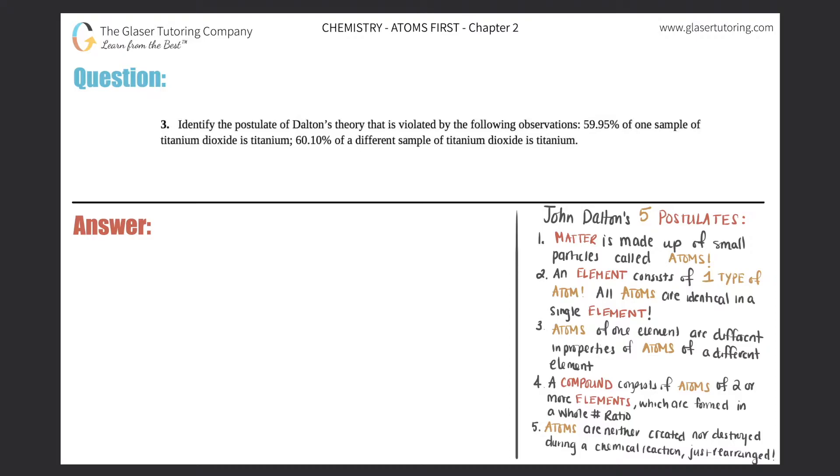Number three. Identify the postulate of Dalton's theory that is violated by the following observations: 59.95% of one sample of titanium dioxide is titanium. 60.1% of a different sample of titanium dioxide is titanium.